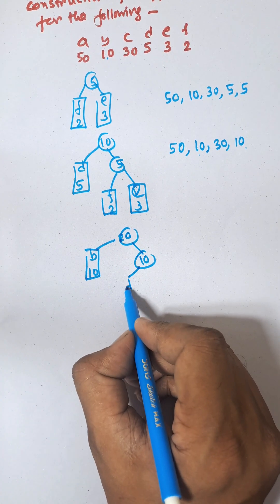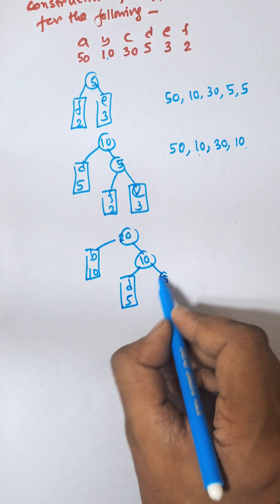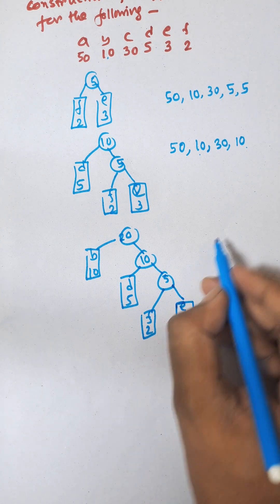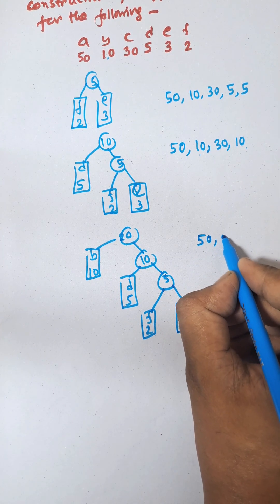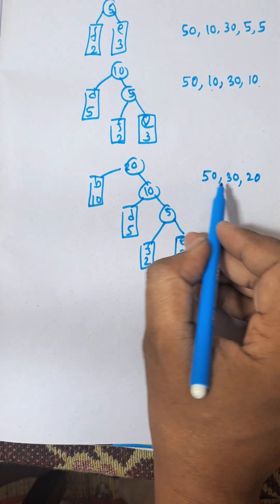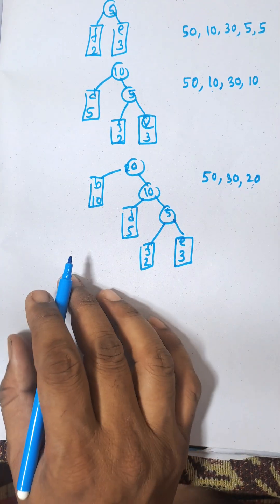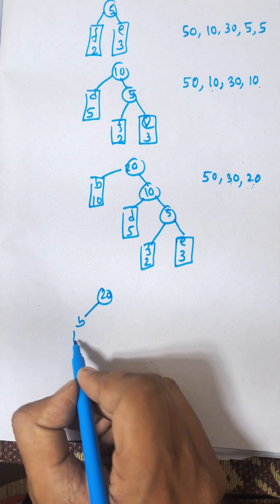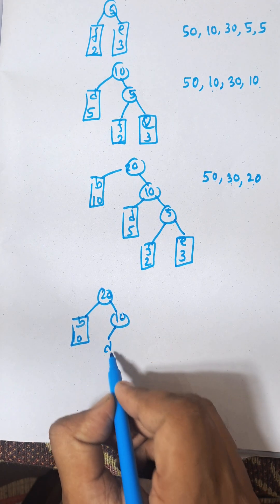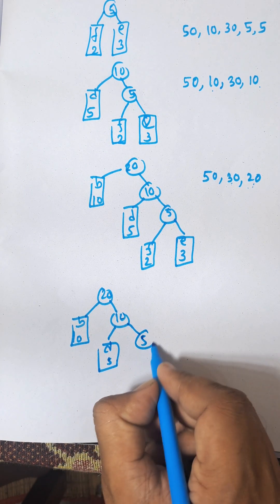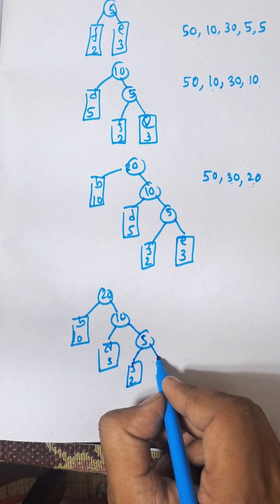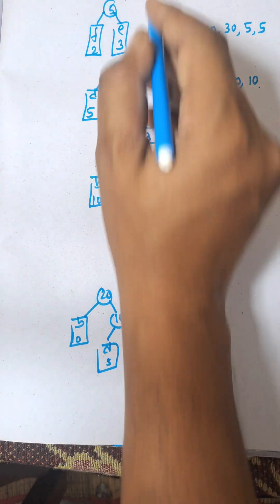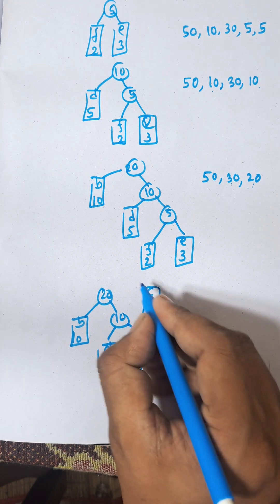The remaining trees are: D(5), with its children (F=2 and E=3), and B(10) combined giving 20. The external nodes are shown in rectangle shapes and the circles are known as internal nodes. Next, 20 and 30 are added. C is 30, so C(30) and 20 are added to give 50.